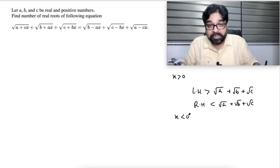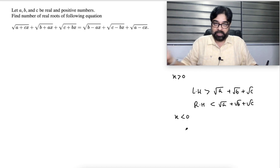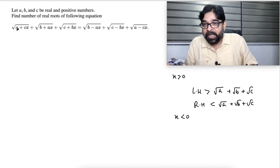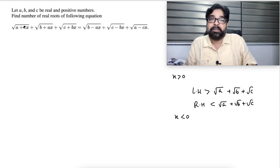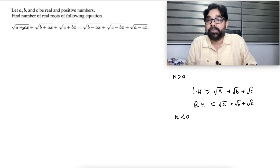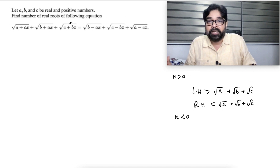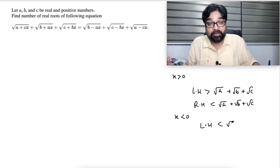Now, x is smaller than 0. The same thing will come. x is smaller than 0 — think. A, C are positive, x is negative. So this will be a negative quantity. A minus a negative will be 100% less than A — it also can happen, but it's not allowed because we are talking about real roots. So this will be less than √A. This will be less than √B. This will be less than √C. Means the left-hand side is less than √A + √B + √C.